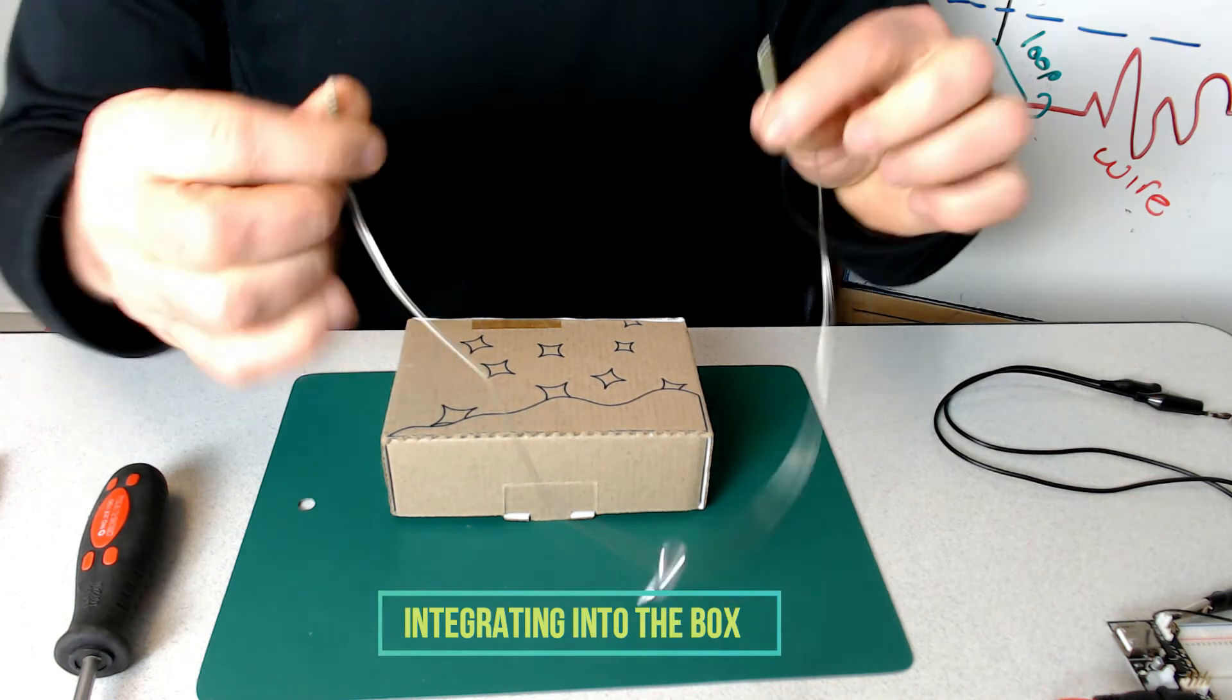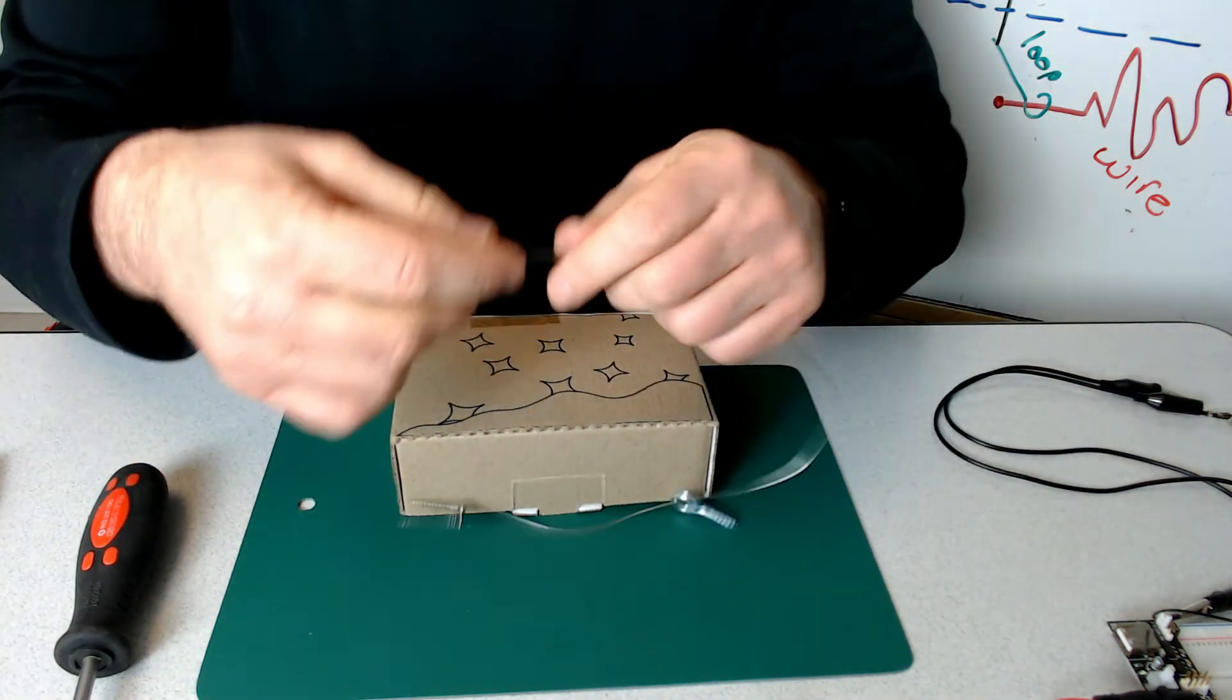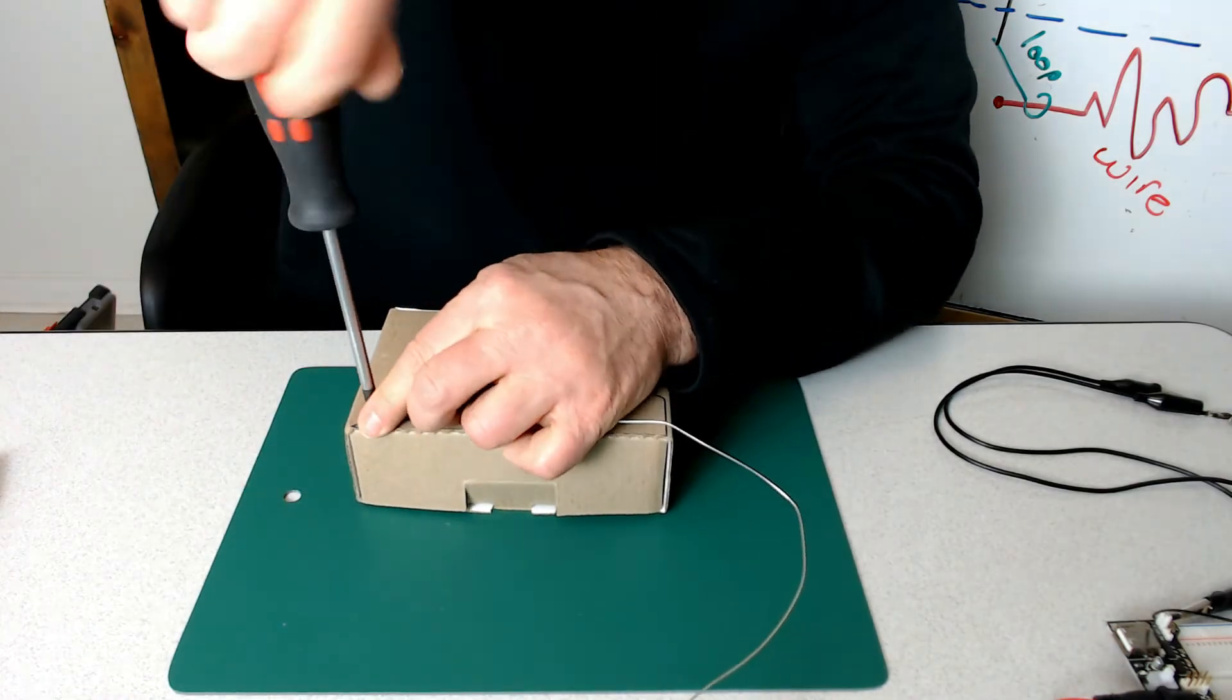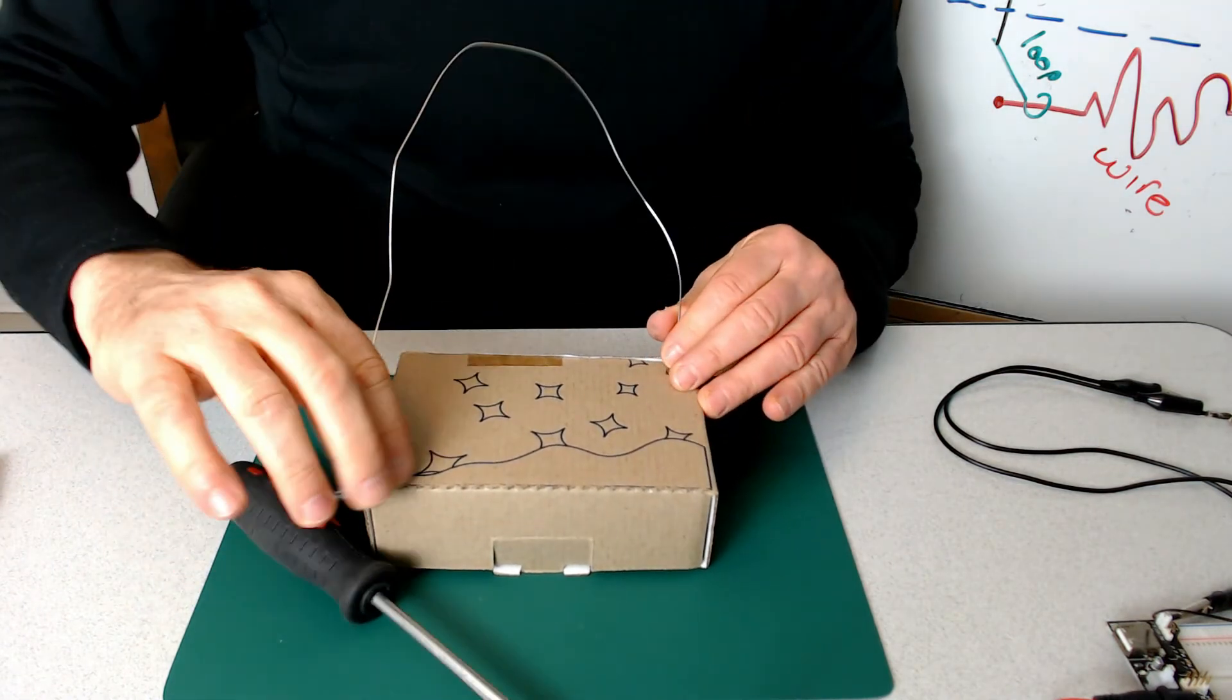Let's integrate our system into the box. We'll take the two screws at the two ends of the flexible wire and we'll use a screwdriver to drive them into the box. We'll do it on both sides.